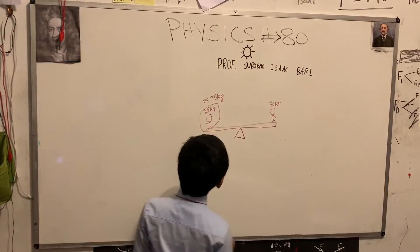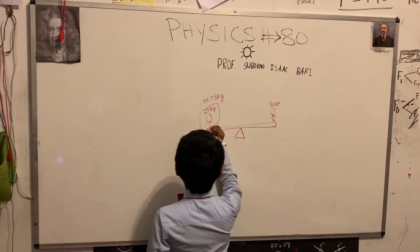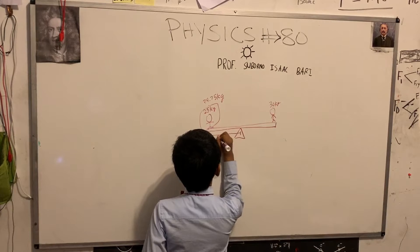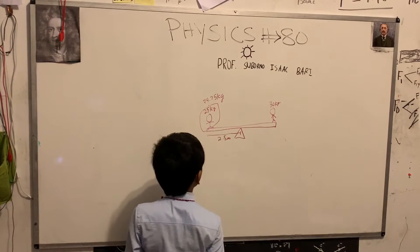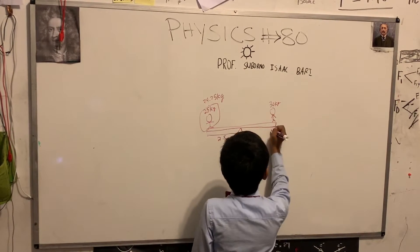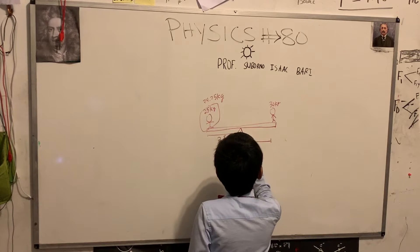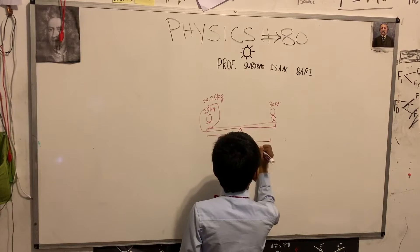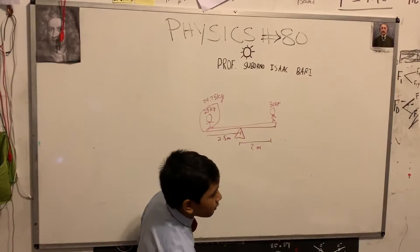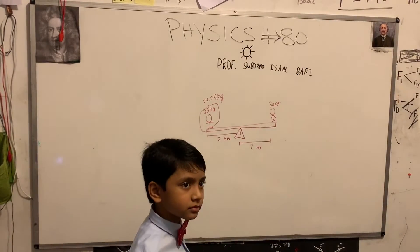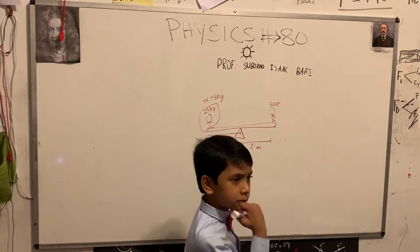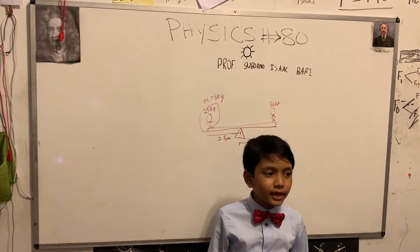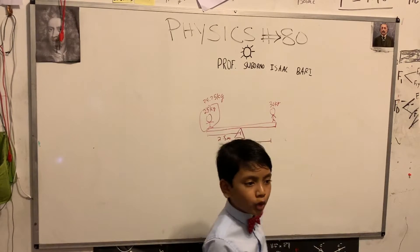So anyways, if the pivot is placed 2.5 meters away from this 25 kilo tile, how far away does the 30 kilo tile have to be on the seesaw to keep the seesaw in equilibrium? The net torque has to equal zero. So technically we're still in the world of statics, but we're bringing back the old world of torque as well.